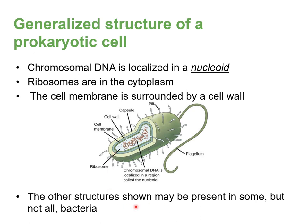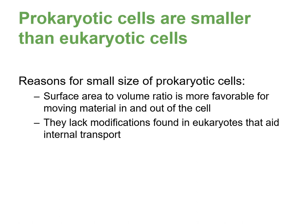Some structures may be present in some bacteria but not all — like a flagellum or pili, used essentially for movement. Many diseases have these structures that help bacteria move better through our body. Some also have an external capsule. Because prokaryotes are simpler and usually unicellular, they are smaller than eukaryotic cells — the surface area to volume ratio is more favorable for moving material in and out of the cell.